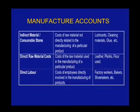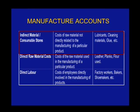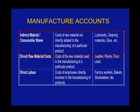Moving on to consumable indirect materials, also called consumable stores. When we manufactured our paper chain, we spoke about the glue, the sellotape, and the cleaning materials. These are costs of raw materials not directly related to the manufacturing of a particular product — lubricants, cleaning materials, glue, and so on. As we discuss this terminology, make a mental note so that when we get into the ledger accounts you understand what we are doing.